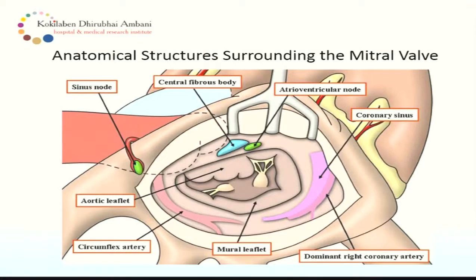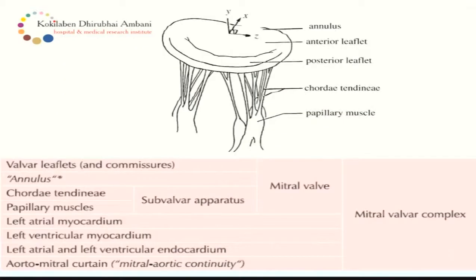Before going closer to the mitral valve, it is important to know the anatomical structures surrounding it. This is the surgeon's view — this is the head end, this is the leg end of the patient. We are opened through the left atrium; this is the AML, this is the PML. What is important for us is knowing about the location of the central fibrous body, the AV node, the coronary sinus on one part, and the left circumflex artery on the other part, along with the mural leaflet and the anterior leaflet.